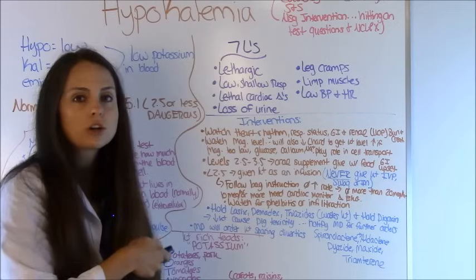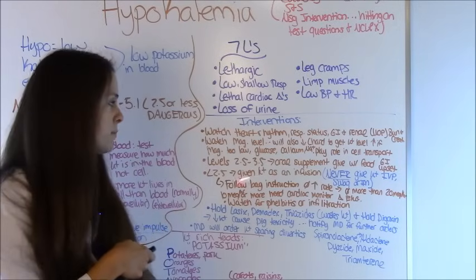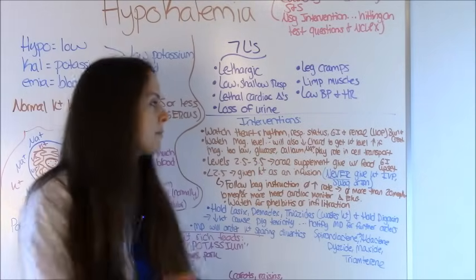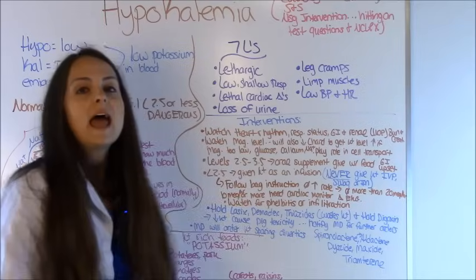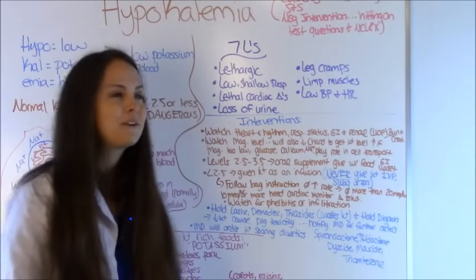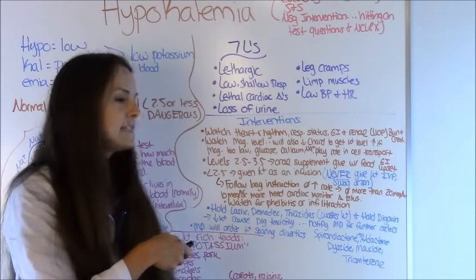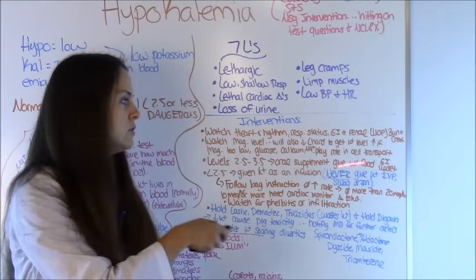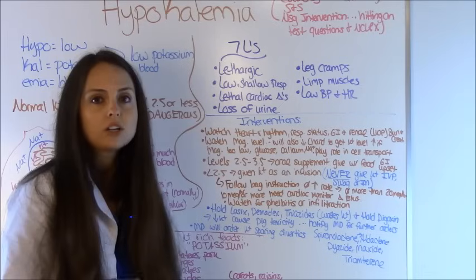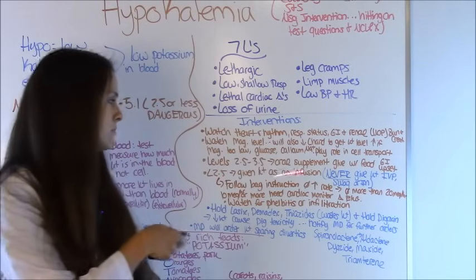Typically, whenever a patient has a potassium level of 2.5 to 3.5, the physician will normally just order an oral supplement of potassium — these are the big white pills, or you can get a powder and mix it in a juice. You want to give this with food because these medications can cause GI upset, so if the patient can eat, you probably want to give them something to eat with that.